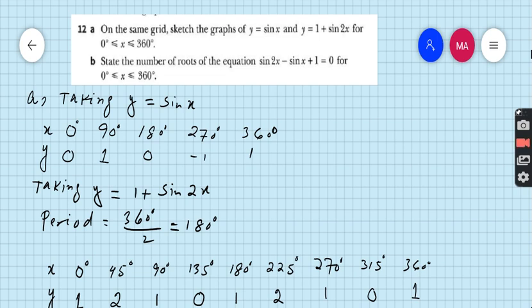Students, we will make the table for both equations. You can see on the screen part a. First taking y equals sin x, this is the general equation, so for the graph of the general equation of sin x the table is very easy - just take a 90 degree gap.